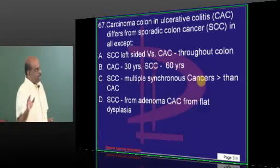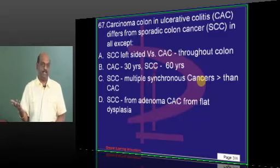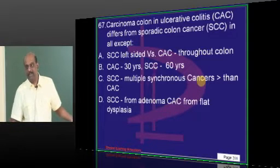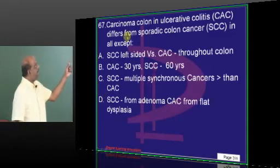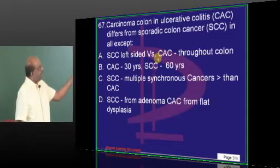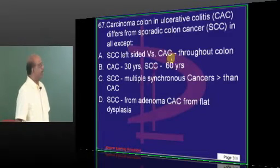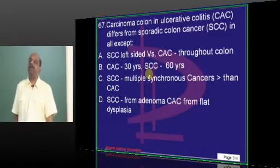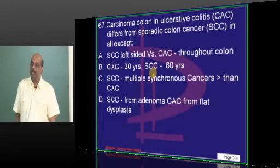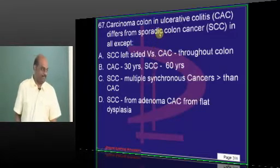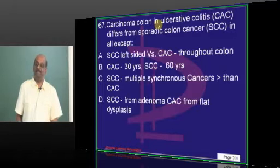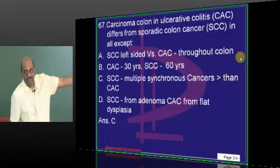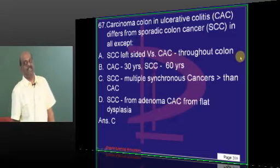Carcinoma colon can occur due to ulcerative colitis as a preceding event, or it can also occur sporadically without any cause. What are the main differences between the two? The one which occurs sporadically will be left-sided. The one which occurs due to ulcerative colitis can be found anywhere along the colon. Ulcerative colitis associated will come in the early part of age, 30 years, versus 60 years. Multiple synchronous cancers are more with carcinoma associated with ulcerative colitis.